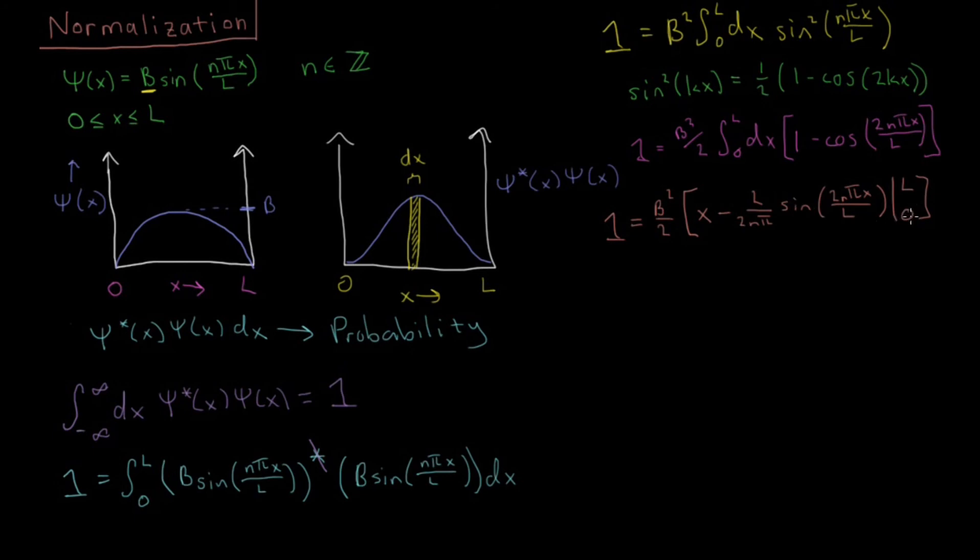Similarly, at the other end of the evaluation, this will be 2n pi zero over L. This will be sine of zero, and sine of zero is also going to equal zero. So at both the high end and the low end, both at x equals L and x equals zero, this sine part is going to be zero. So I'm just going to cross that out and note that that part is equal to zero, and I'm just going to worry about this x here. So then we have one equals b squared over two, and then we evaluate that at x equals L, which is L, subtract out the value at x equals zero, which is zero, and we end up getting L.